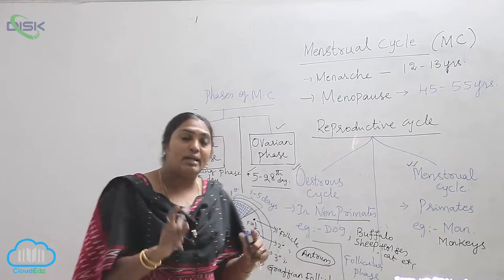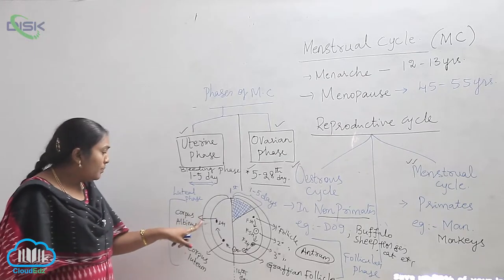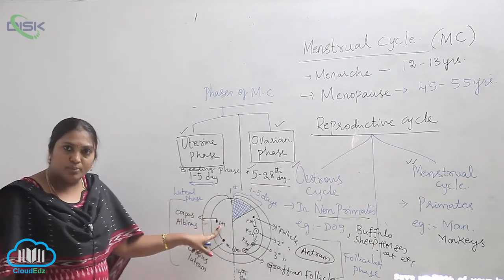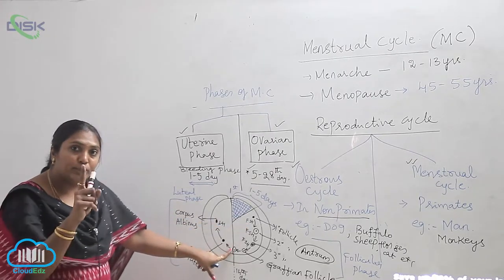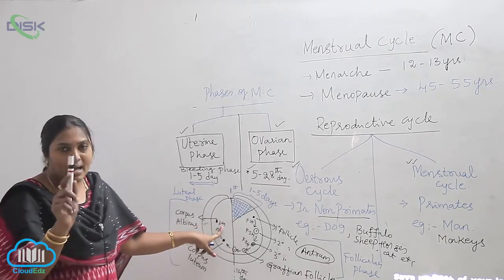If fertilization does not occur, the corpus luteum will form into corpus albinus in the presence of luteinizing hormone. This means FSH role stops on the 14th day. After the 14th day, the luteinizing hormone will come.